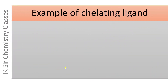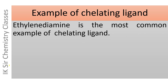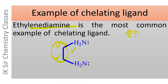Let us see an example of chelating ligand. Ethylenediamine, which is abbreviated as EN, is the most common example of chelating ligand. This is the ethylenediamine molecule — CH2-CH2 — ethylene and diamine. It has two donor atoms, and when it forms coordinate bond with the central metal ion through these two nitrogen atoms, a five-membered ring is formed. And therefore, ethylenediamine is a bidentate chelating ligand.